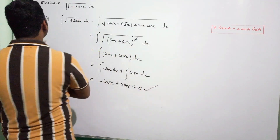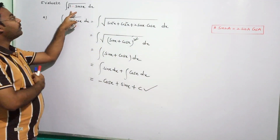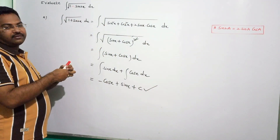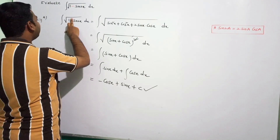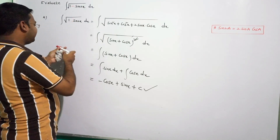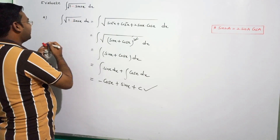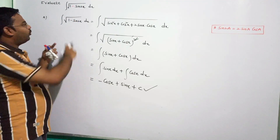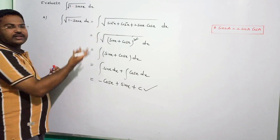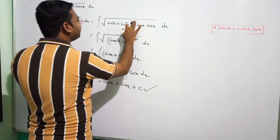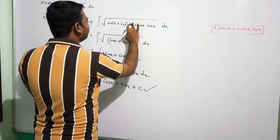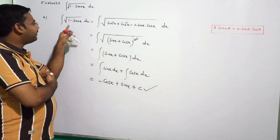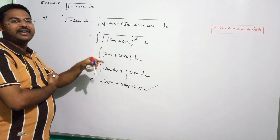Next problem: evaluate integral of √(1 − sin2x) dx. Here the minus sign — same formula applies. We write 1 as sin²x + cos²x, and sin2x as 2sinx·cosx. So 1 − sin2x = sin²x + cos²x − 2sinx·cosx.